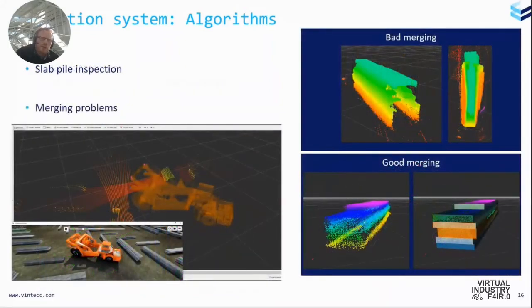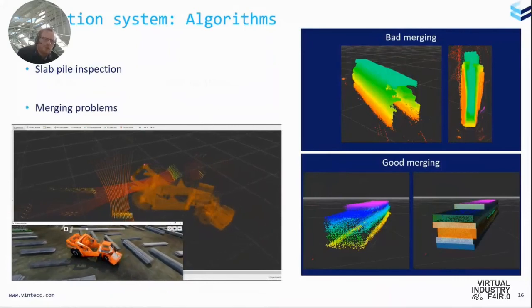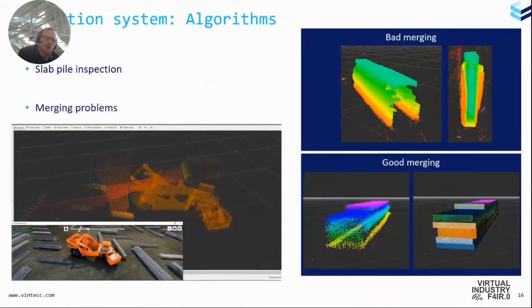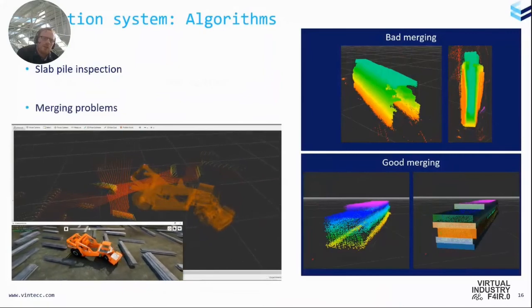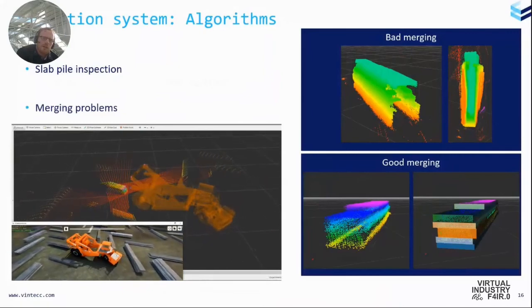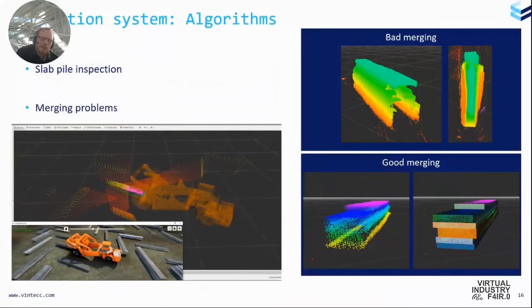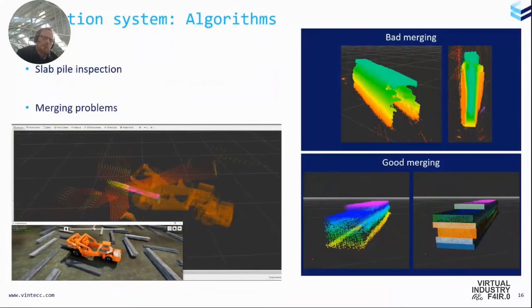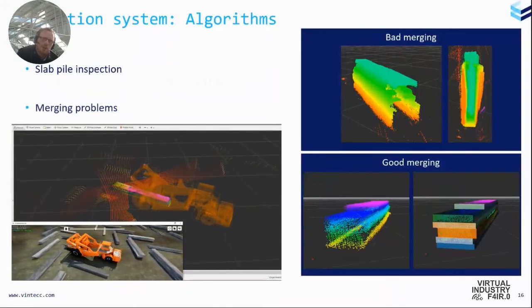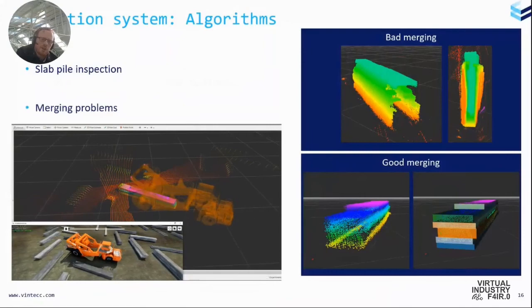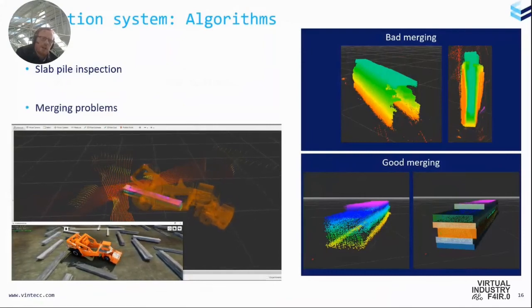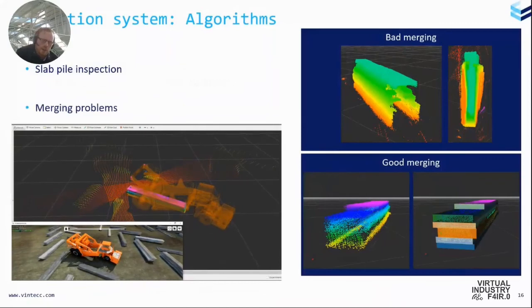Another nice thing or nice feature that is helping the operator a lot is the slab pile inspection. So when a machine, you can see it here in the animation, when a machine is driving over a slab pile, it needs to be scanned because once it's over a slab pile, the slab pile cannot be scanned anymore. And that's because these slab piles are quite hot. They can be hundreds of degrees Celsius. And if you put sensors inside this machine, they will not last very long.